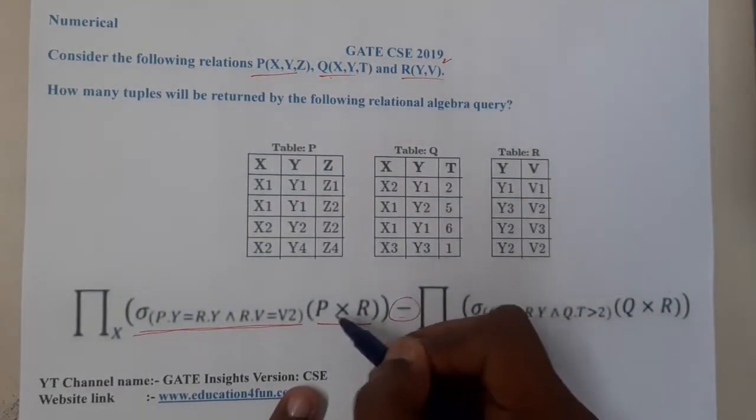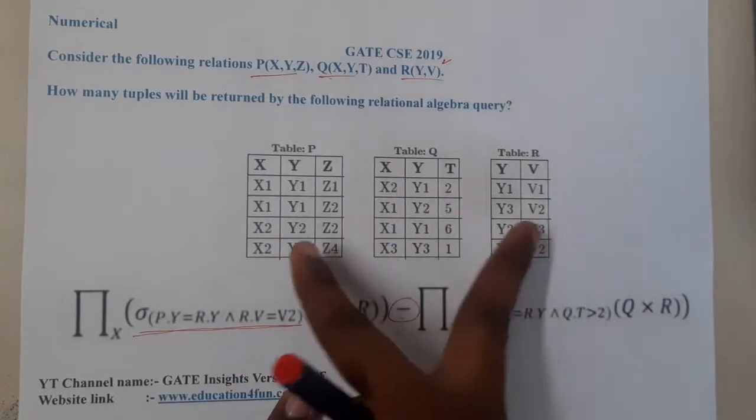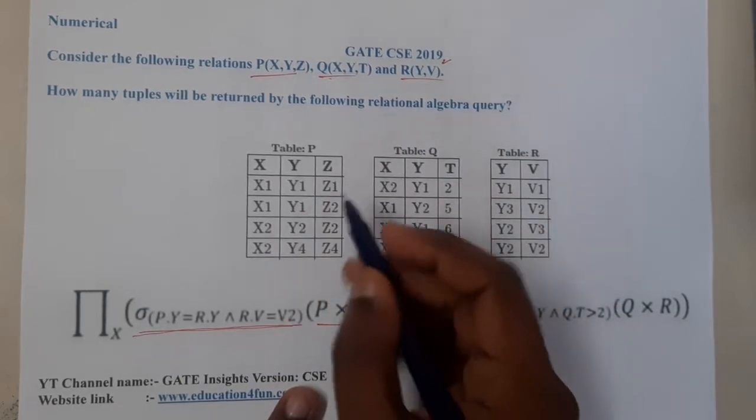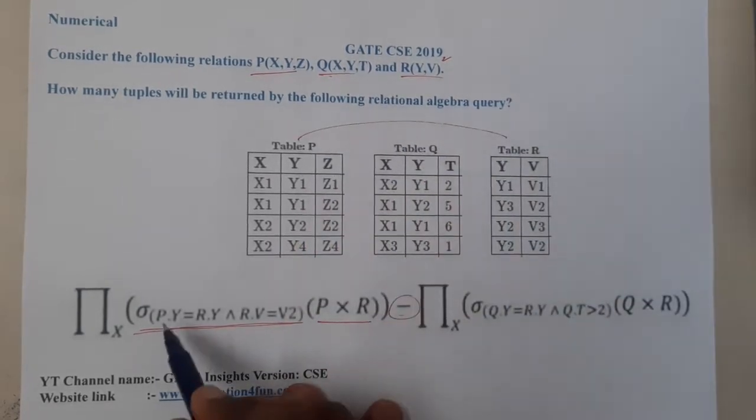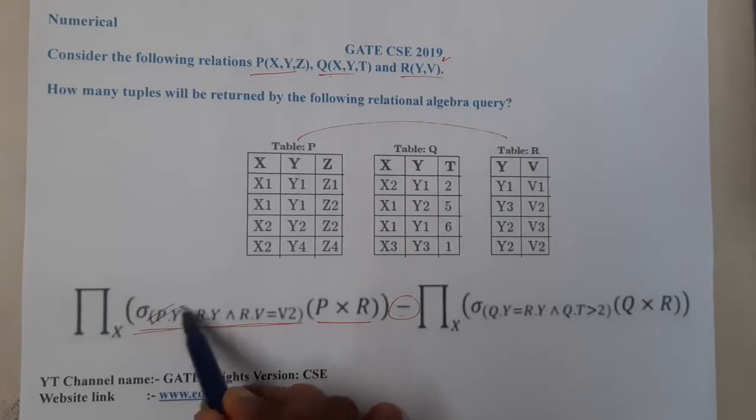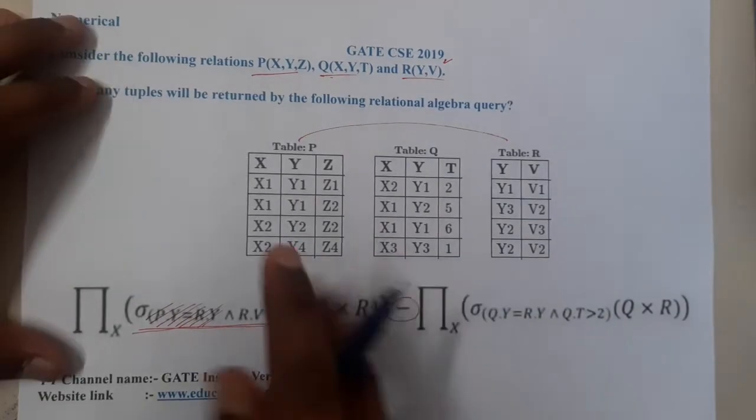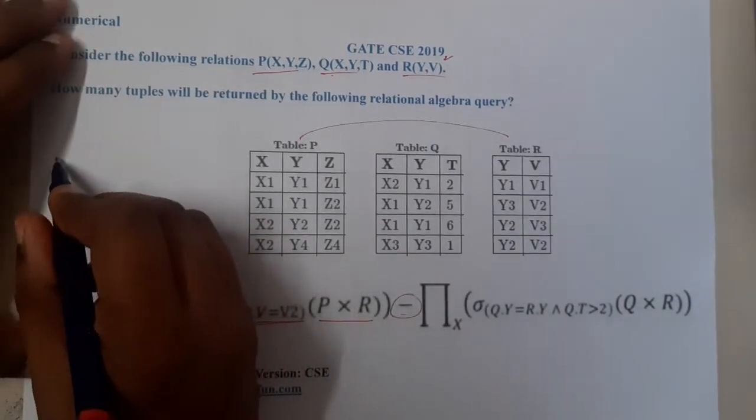If we perform cartesian product in between P and R, what is the common row? The common row is Y. So if I am checking Y, so that is nothing but this condition, right? So P.Y I am checking with R.Y. Yes, so that's what I also want to check. So I think we can directly start writing it.